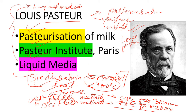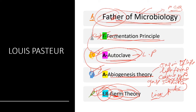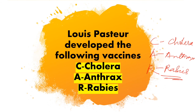Quick revision: Louis Pasteur — L4 liquid media, P4 pasteurization of milk, Pasteur Institute. Two pasteurization methods: Holder method at 63 degrees Celsius for 30 minutes, and Flash method at 72 degrees Celsius for 20 seconds followed by cooling at 13 degrees Celsius. Father of Microbiology mnemonic FATHER: F-Fermentation, A-Autoclave, A-Abiogenesis, ER-Germ theory. Three vaccines: Cholera, Anthrax, Rabies. In our next video we'll talk about Robert Koch.